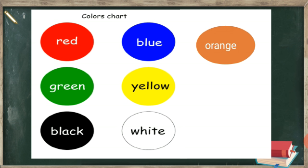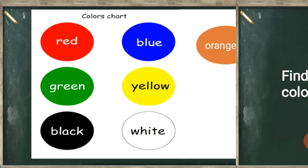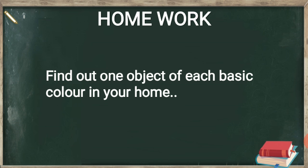Now children, we will revise our basic colors. Hum phir se apne basic colors revise karenge. First is red, second is blue, third is orange, fourth is green, fifth is yellow, sixth is black, and seventh is white. We have learned seven basic color names today. Aap log apni mamma ke saath inko roz repeat karenge aur learn karenge. Then you will do one homework — find out one object of each basic color in your home. Har seven basic color ka ek ek object search karke collect karke rakhna hai.